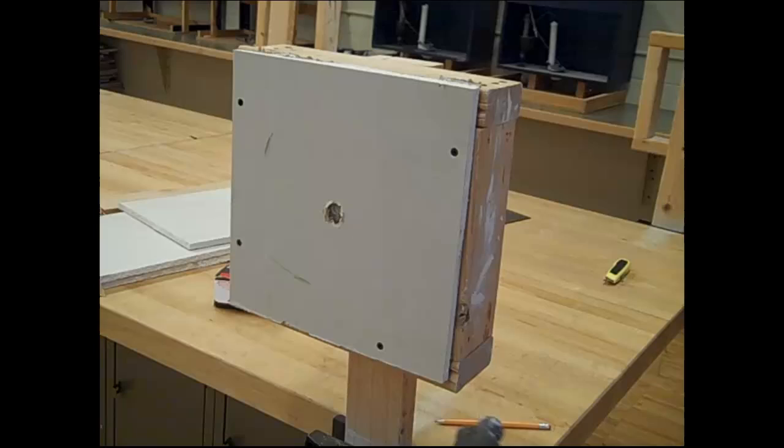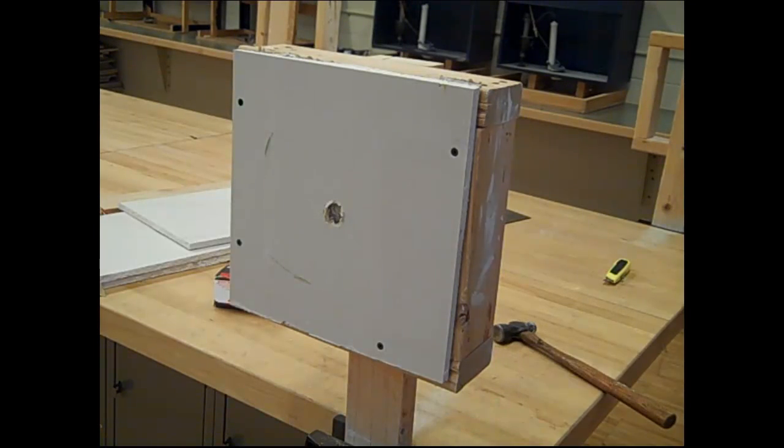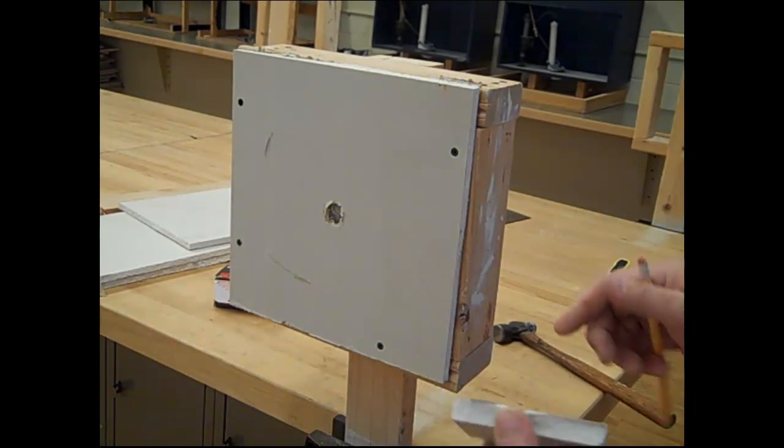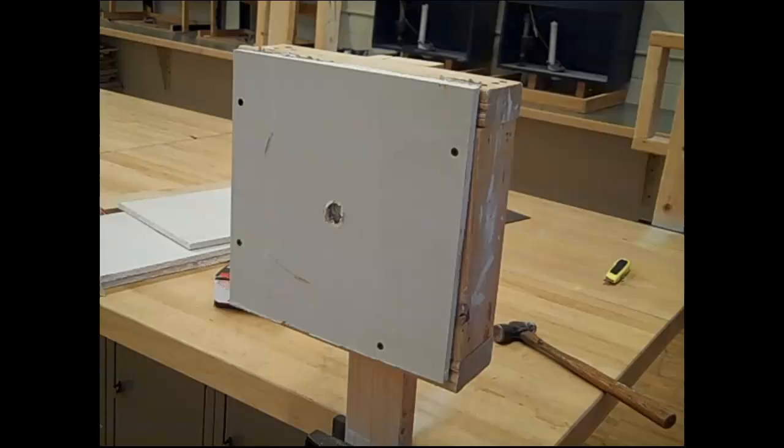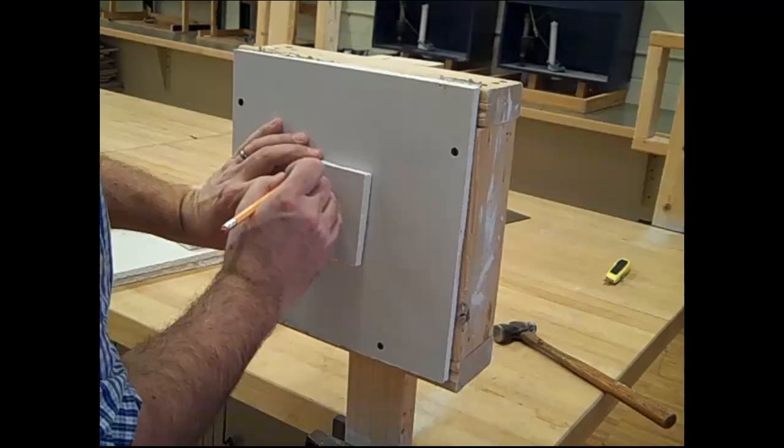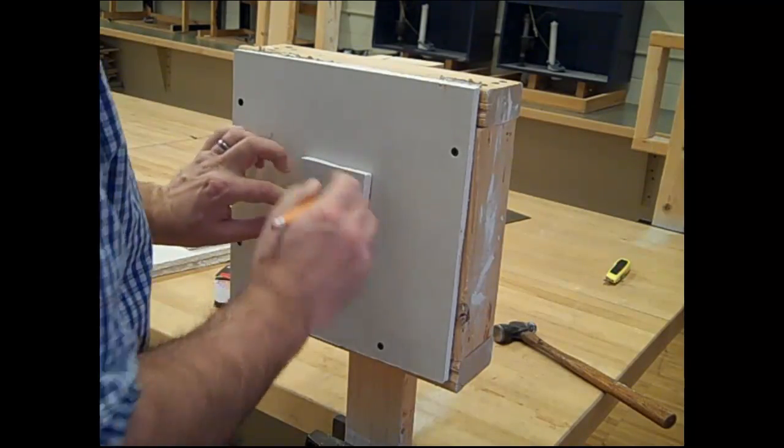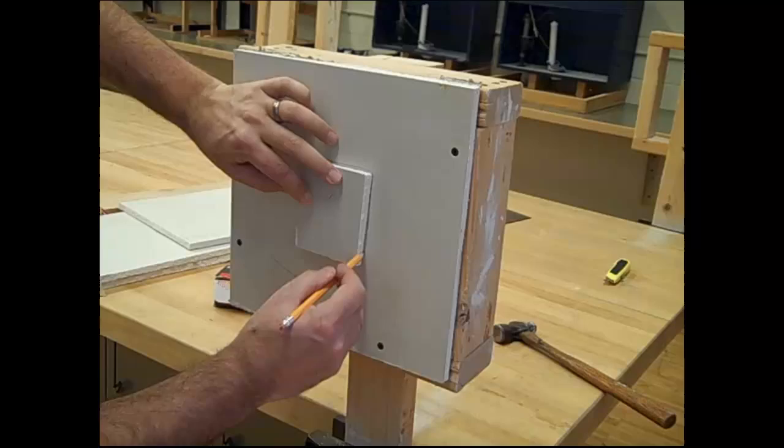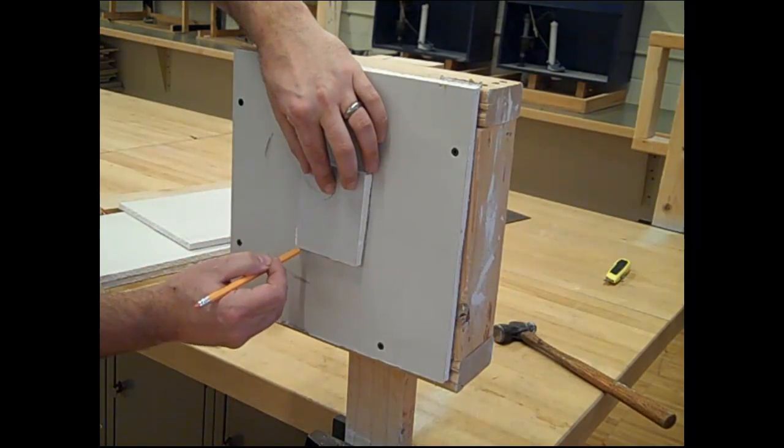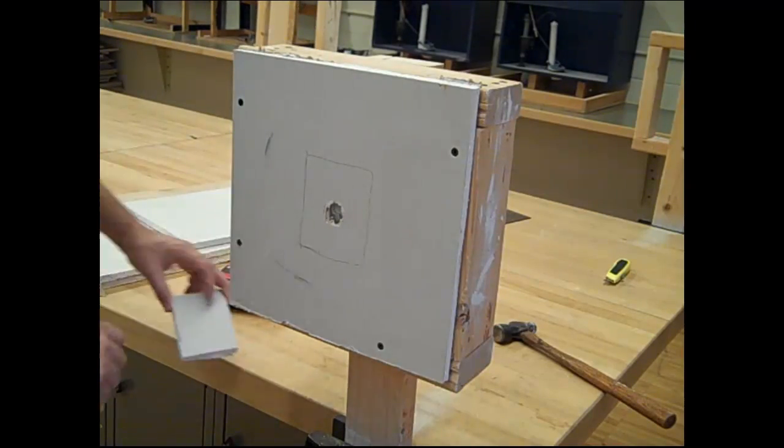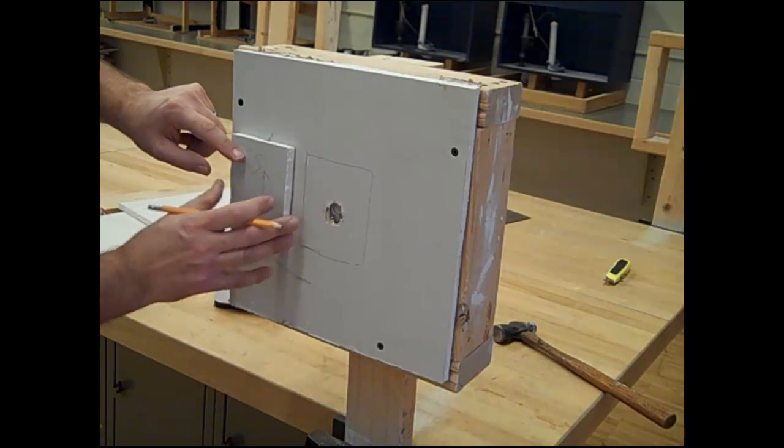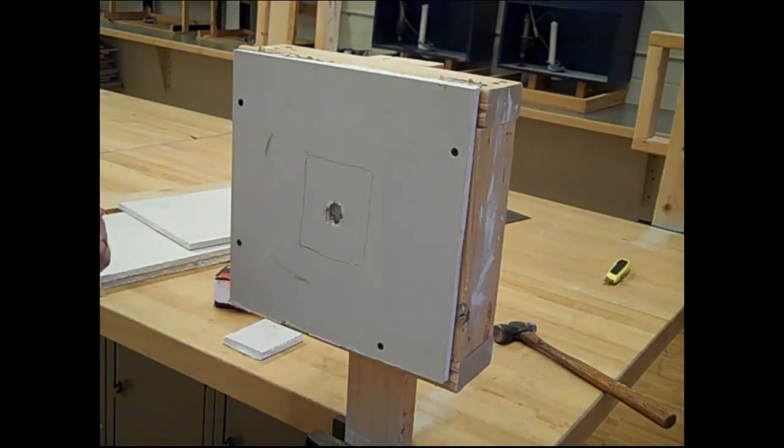Next, grab a scrap piece of sheetrock and I'll teach you how to repair this hole. Take the scrap piece, put it over the top, put your initials on it, and trace. It's okay to be a little bit big on the hole size. Put an up arrow so you know which way was up when you put this back in.